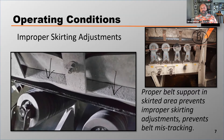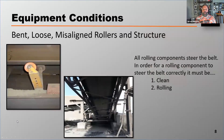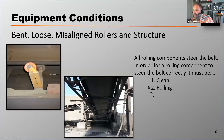Don't assume that every one of these problems is absolutely going to cause a belt to mistrack — sometimes they're so insignificant they may not be that terrible. However, they certainly can contribute to the belt's likelihood to mistrack. A couple of equipment conditions that will cause a belt to mistrack are bent, loose, or misaligned rollers or structure. All rolling components steer the belt, and in order for a rolling component to steer the belt correctly, it must also be aligned.